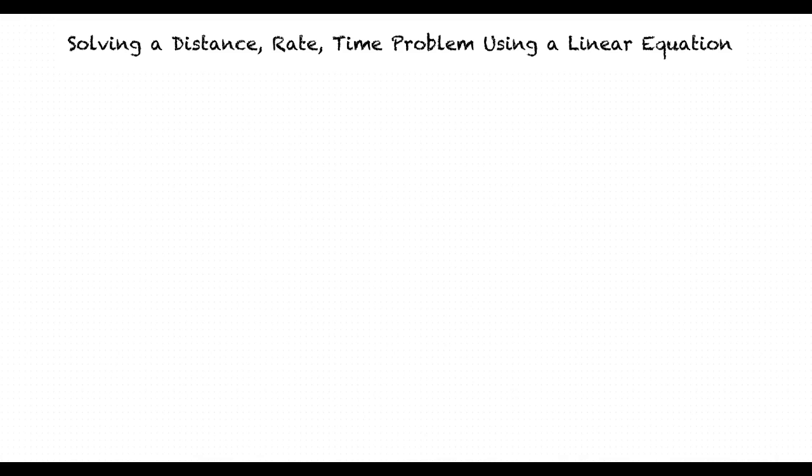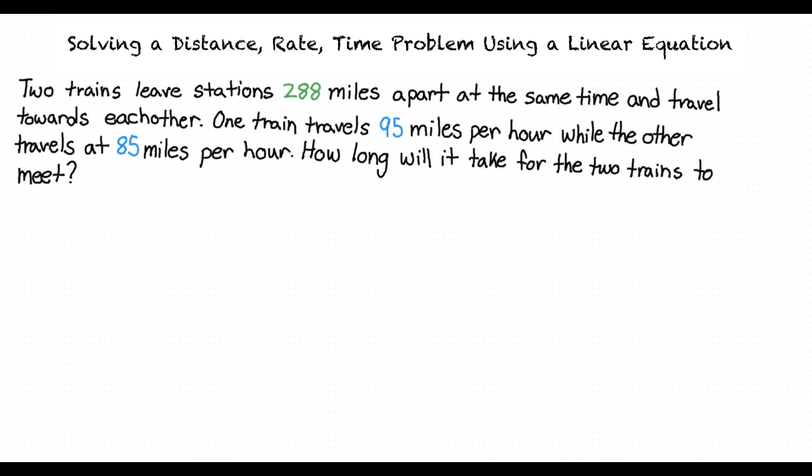Let's try out a practice problem. In this problem, there are two trains that leave two stations that are 288 miles apart at the same exact time. One of the trains travels at 95 miles per hour, while the other train travels at 85 miles per hour, and we are asked to find the time that it takes for the two trains to meet.